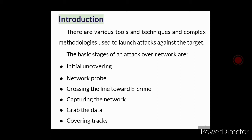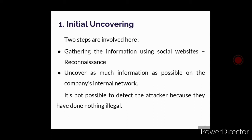The basic stages of an attack — to understand how an attacker can attack on the network: the first stage is initial uncovering, the second stage is network probe, the third is crossing the line toward e-crime, the fourth is capturing the network, the fifth is grab the data, and the last one is covering the tracks.